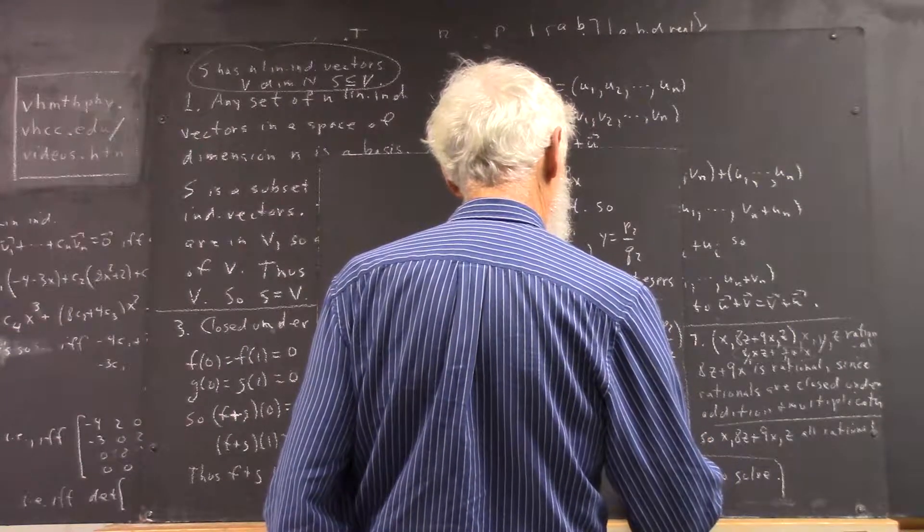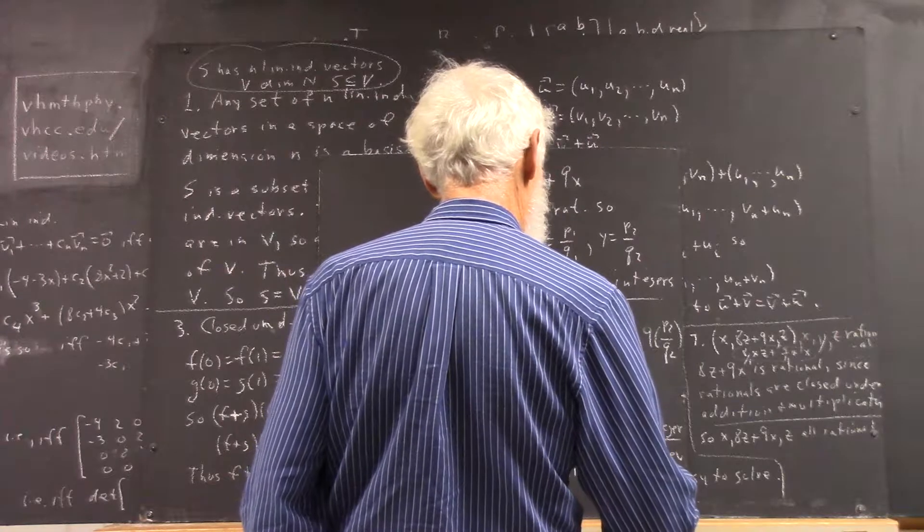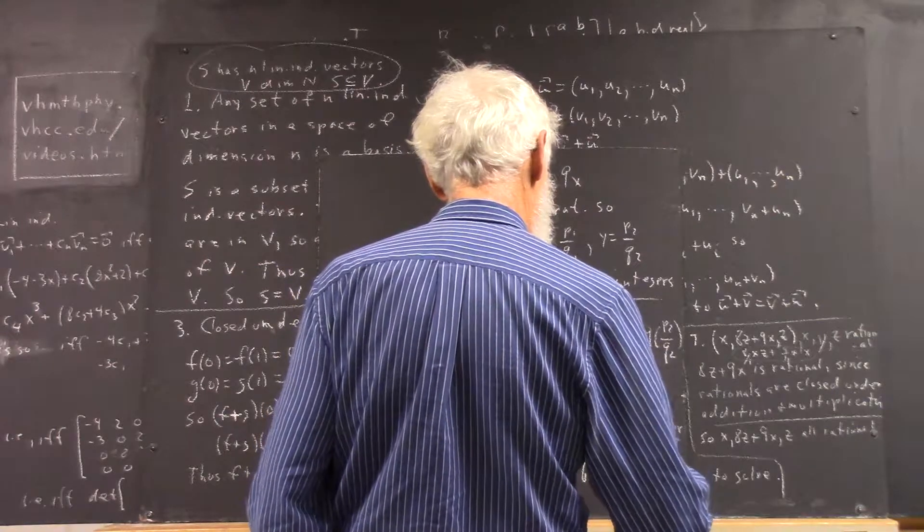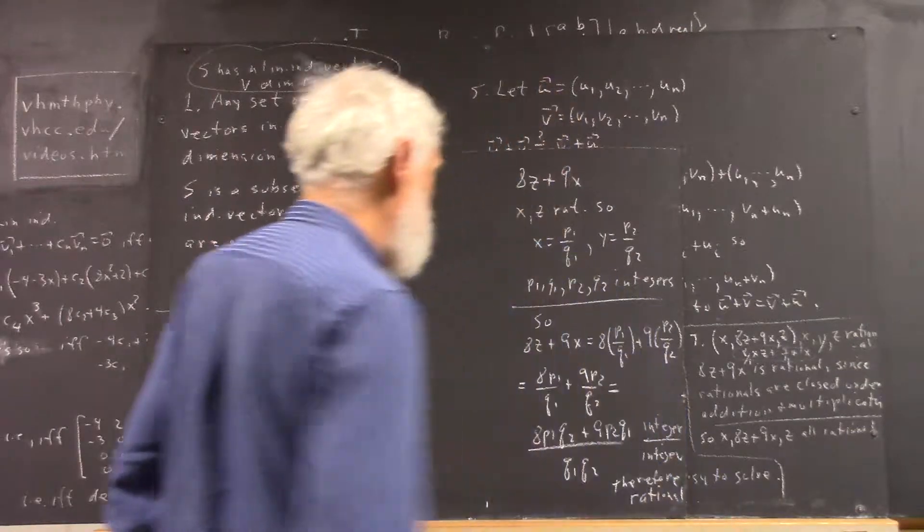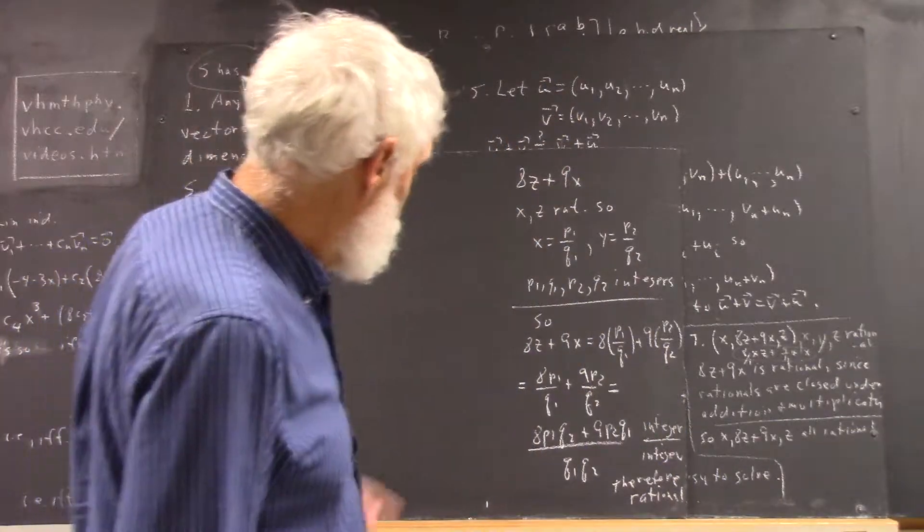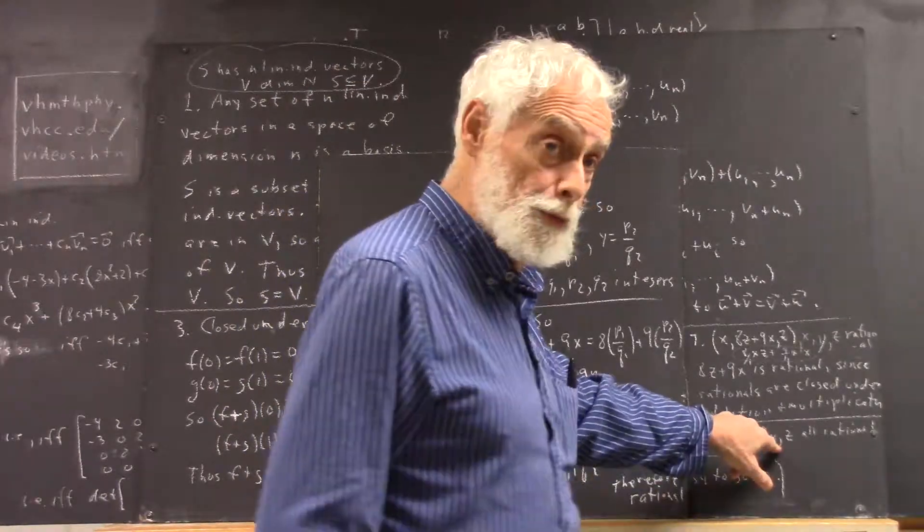So, this is integer over integer. Therefore, rational. So, this is a little more detail, proving that this sum is rational.